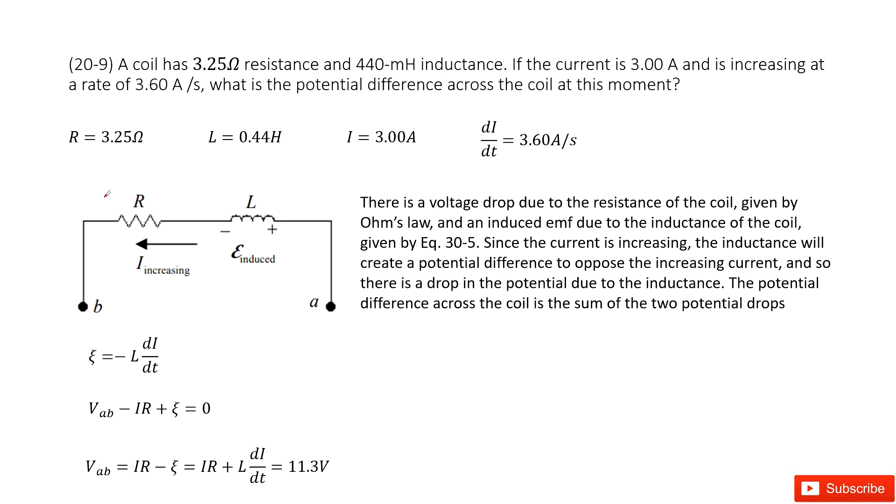You can see we have an RL circuit. Resistance is given, inductance is given, current is given, and the current is increasing at a rate of 3.6 amps per second.